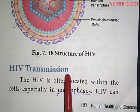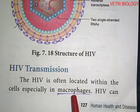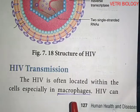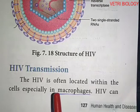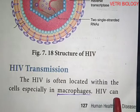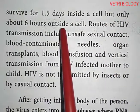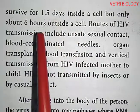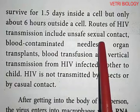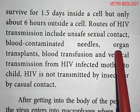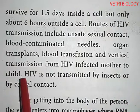Let us know HIV transmission. The HIV is often located within cells, especially in macrophages. Routes of HIV transmission include unsafe sexual contact, blood-contaminated needles, organ transplants, blood transfusion, and vertical transmission from an HIV-infected mother to child.